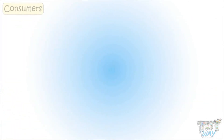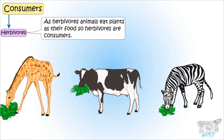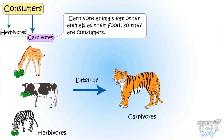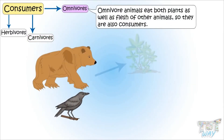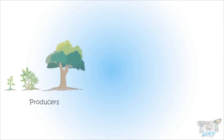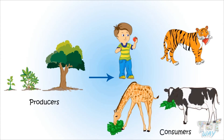Now let's see what are consumers. All parts of plants are used as a source of energy by herbivore animals, as herbivore animals eat plants as their food. So herbivores are consumers. And these herbivore animals are eaten by carnivores. So carnivores eat other animals as their food, so carnivores are also consumers. Omnivore animals eat both plants as well as flesh of other animals, so omnivores are also consumers. So plants are the only living things that are producers, and rest all living things are called consumers.